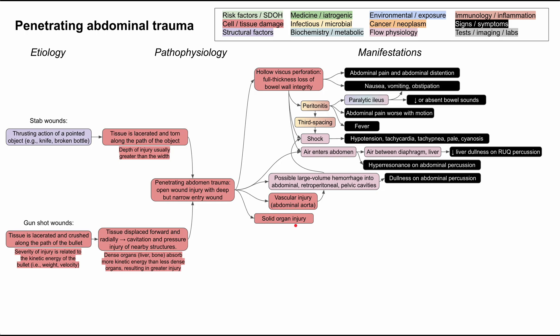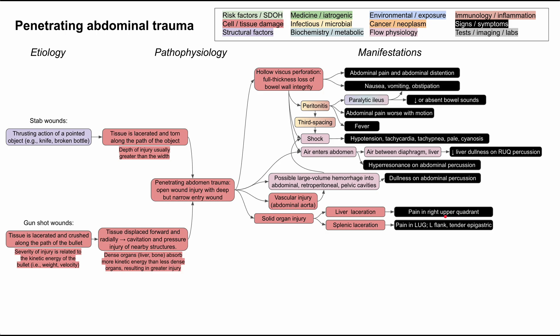Solid organ injury is also worth discussing. The two big ones are liver laceration and splenic laceration, though colon laceration and stomach laceration are encompassed by hollow viscous perforation. Liver laceration causes pain over the right upper quadrant. Splenic laceration causes pain in the left upper quadrant, as well as pain over the left flank and a tender epigastric area. Both can be worse with inspiration, as the diaphragm pushes down into the area of laceration.